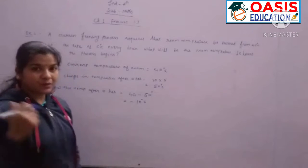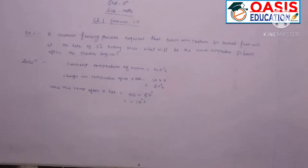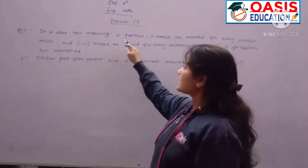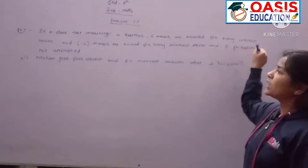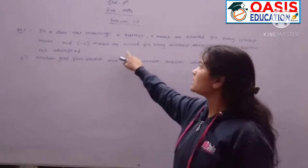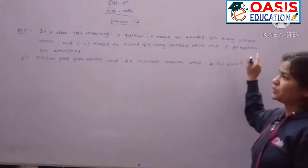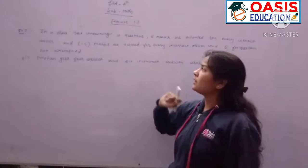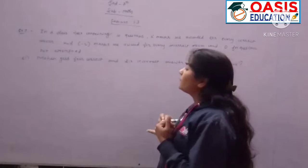Understood? Now let's come to the next example, question number 7. In our class, it is a quiz with 10 questions continuing. 5 marks are awarded for every correct answer, and minus 2 marks are awarded for every incorrect answer, and 0 for questions not attempted.